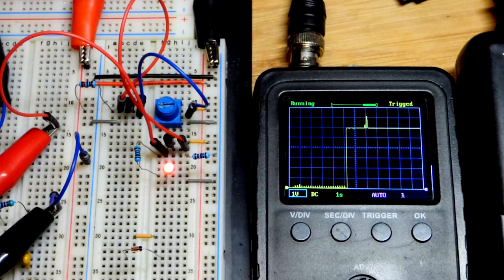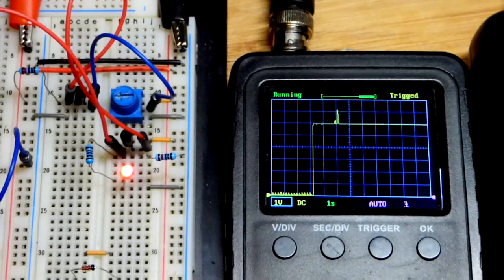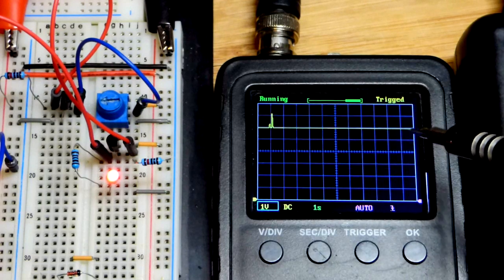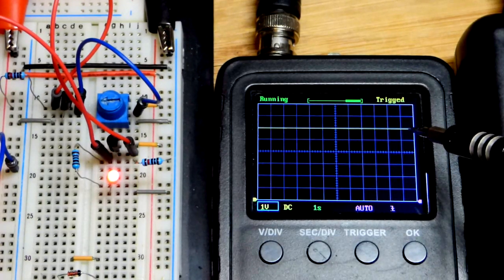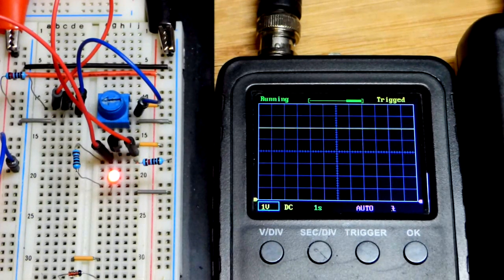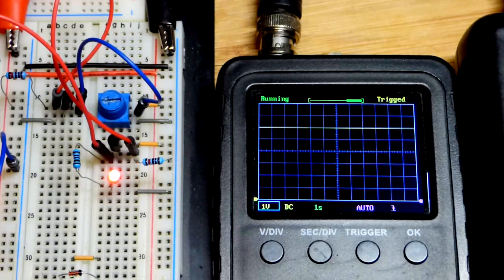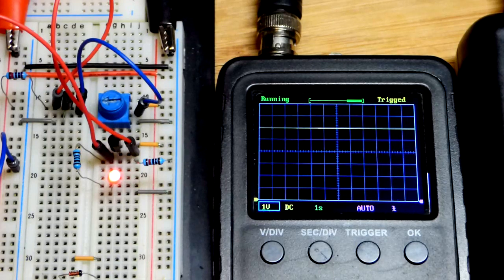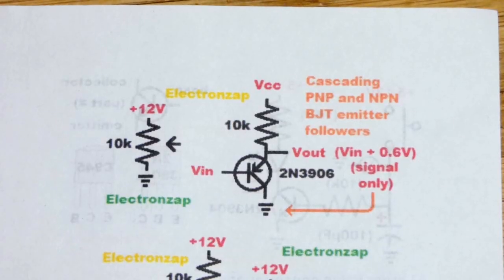There you can see now we have six volts, probably pretty close to the exact same spot it was with the trim pot alone, but now it can provide more power to a load than the trim pot alone can without losing voltage.